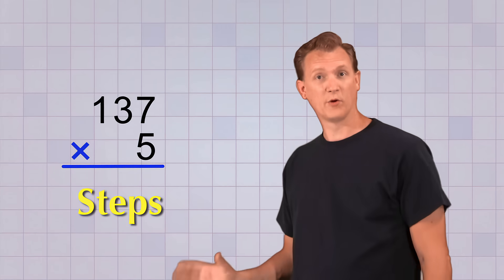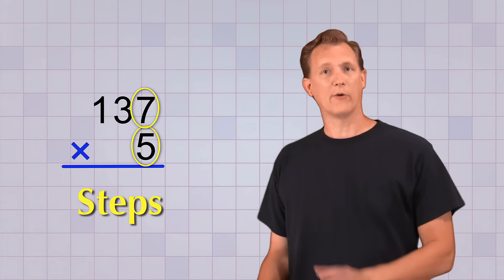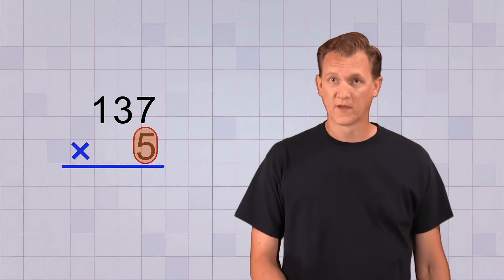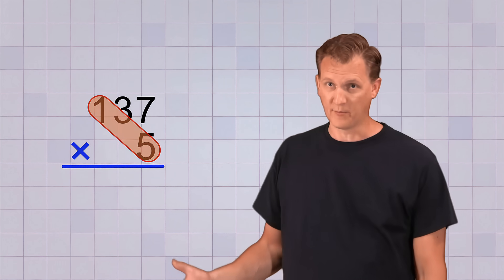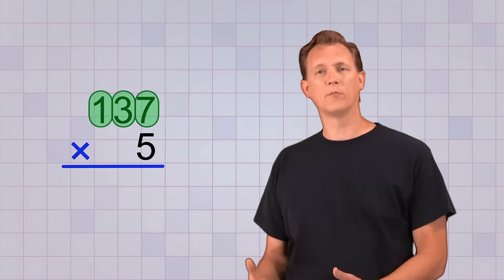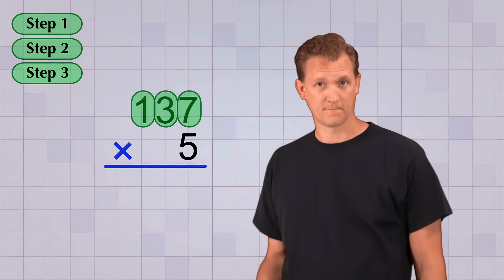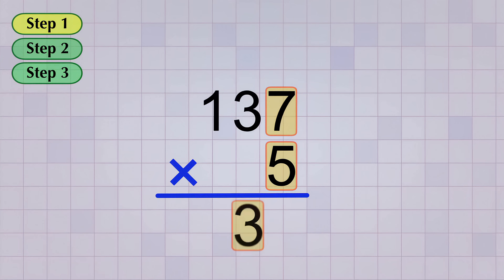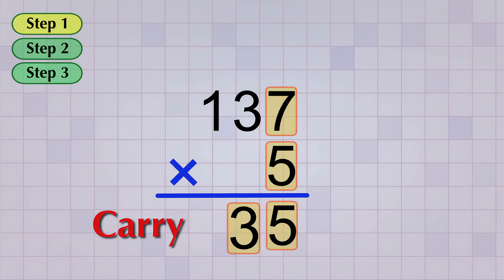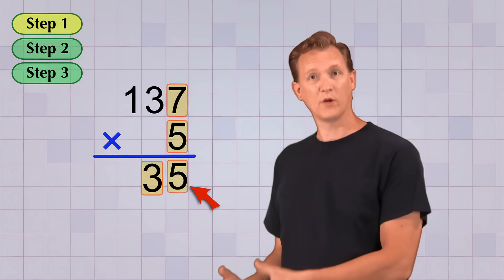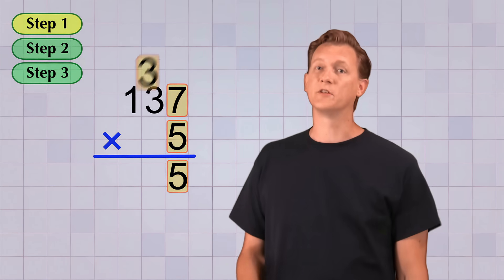Those small steps involve multiplying a digit in the bottom number by a digit in the top number. Since the top number has three digits, that means our problem will have three small multiplication steps. For the first step, we multiply the bottom digit, 5, by the digit in the ones place of the top number, which is 7. So 5 times 7 gives us 35. We have to carry the first digit to the top of the next column, so the 5 stays in the ones place of the answer, but the 3 gets carried up to the top of the tens place column.